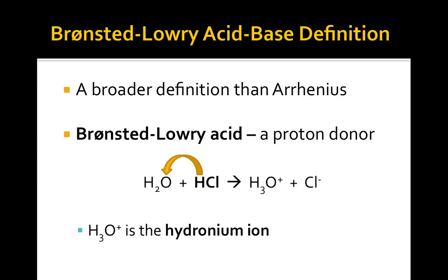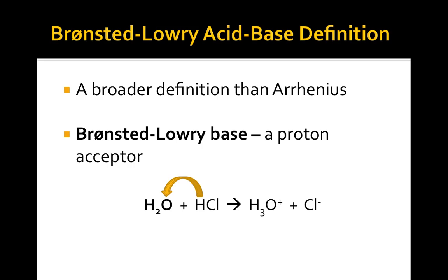A more general model is the Bronsted-Lowry model. A Bronsted-Lowry acid is a substance that donates a proton during a chemical reaction. Here, hydrogen chloride donates an H-plus to the water molecule to produce hydronium ion and chloride ion. Thus, hydrogen chloride acts as a Bronsted-Lowry acid. Bronsted-Lowry bases are substances that accept protons during a reaction. The water molecule in this reaction acts as a Bronsted-Lowry base because it is accepting an H-plus from hydrogen chloride to form the products.